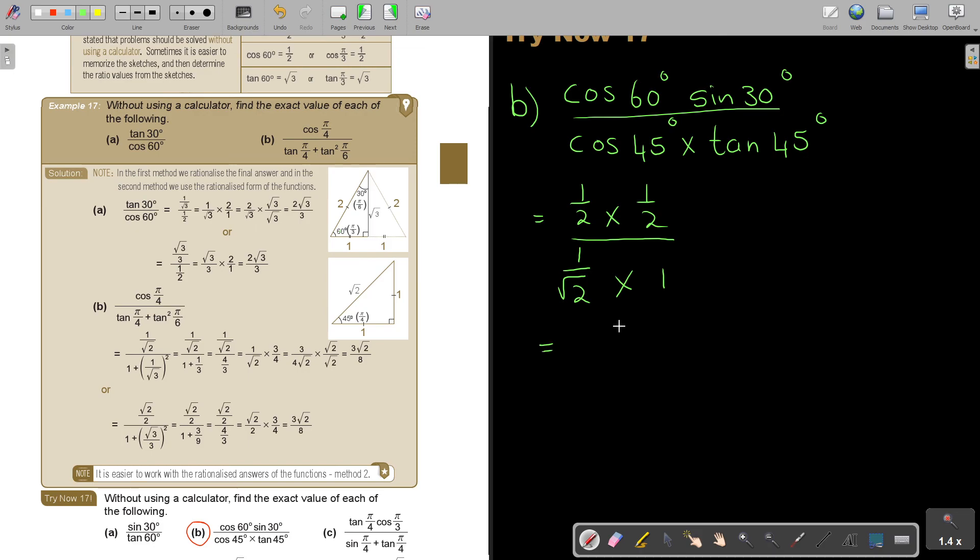Cos 45 is adjacent over hypotenuse. And now I must make the decision, but I think we will work with the value that's not rationalized. And then tan 45. Always remember tan 45 is just 1, because it's opposite over adjacent. So that's a quarter, 1 over square root 2. And that's a quarter, multiply the reciprocal square root 2 over 1. And my final answer will be square root 2 over 4. And that's how you do it, and that's also in further mathematics.